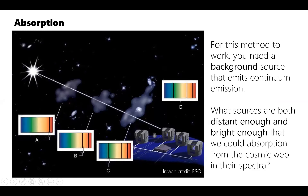For the absorption method, you need a background source that emits continuum emission. Imagine an extremely distant galaxy or source that emits at all wavelengths — as it travels through the universe towards us, it passes through the cosmic web in various places, and the gas absorbs some of the light. By the time it reaches us on Earth, it has imprinted in it the signature of the cosmic web wherever it was absorbed along the way.